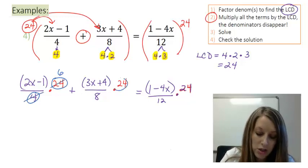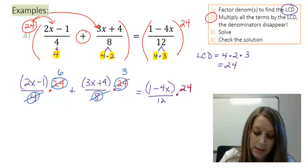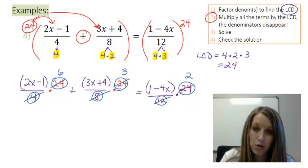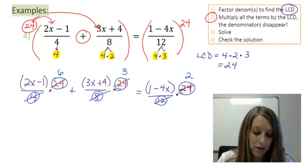So in my first fraction 24 divided by 4 leaves me with 6. In my second fraction 24 divided by 8 leaves me with 3. And on my right hand side 24 divided by 12 leaves me with 2. So let me just write out what I have left.